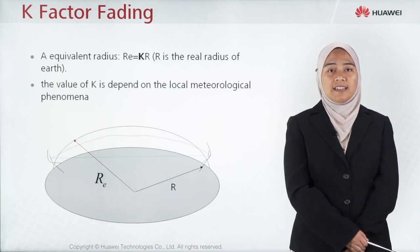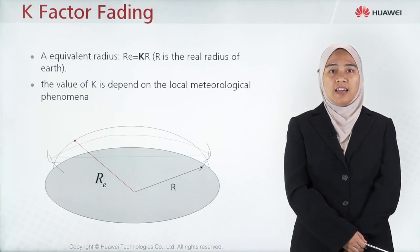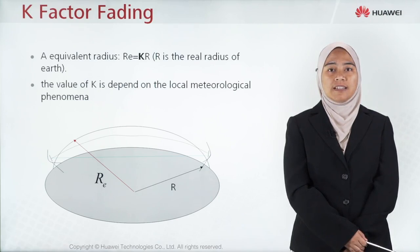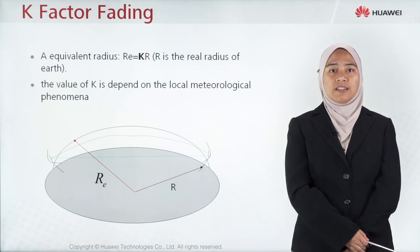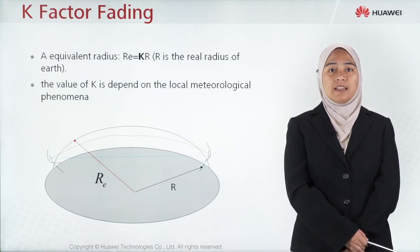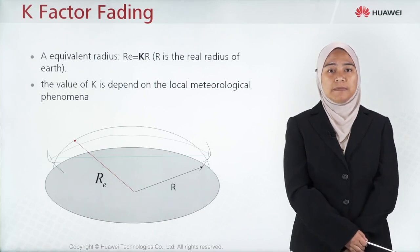Next is the K-factor fading. The equivalent radius RE equals KR, where R is the real radius of the Earth. The value of K depends on the local meteorological phenomena.